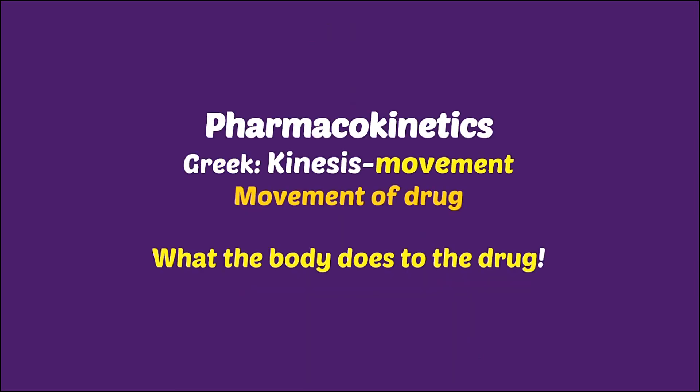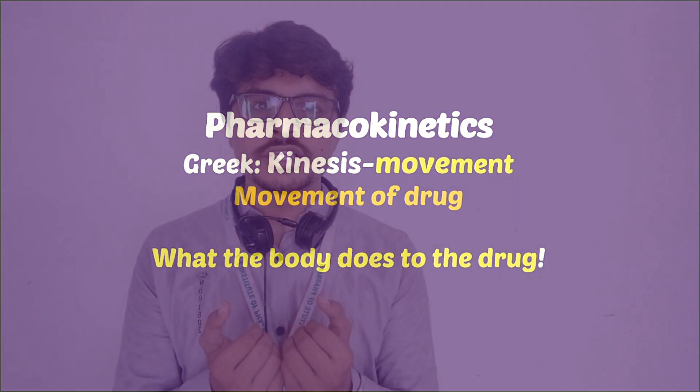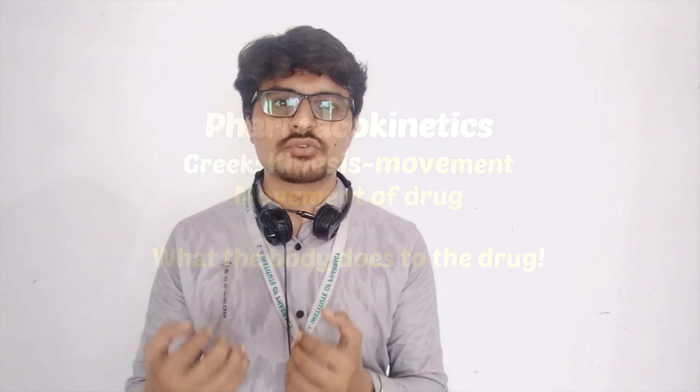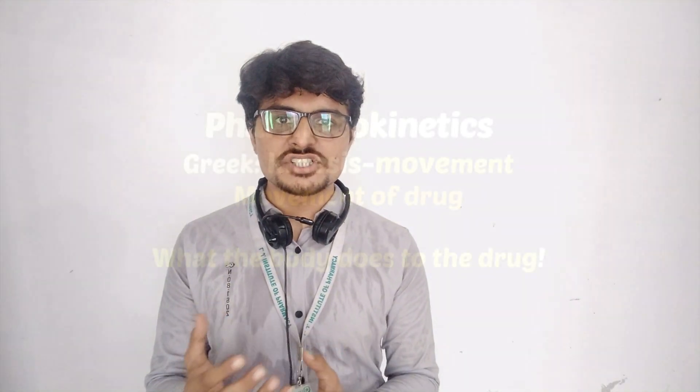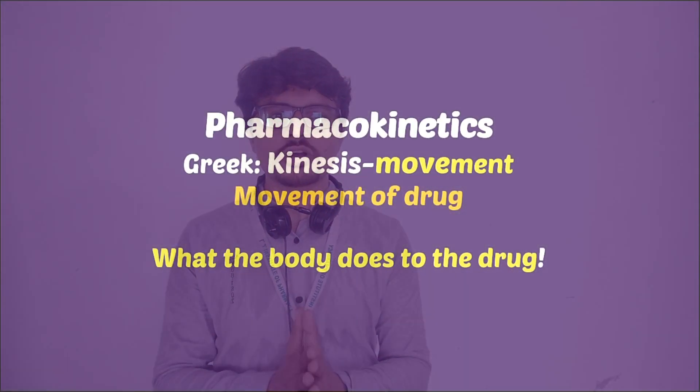Moving on to pharmacokinetics. The word kinetic is derived from the Greek word kinesis, meaning movement. So pharmacokinetics is the movement of drug — it is what the body does to a drug. When we take a drug orally, it moves to our GI tract, is absorbed, enters the bloodstream, goes to various cellular levels, comes back to the liver, and is passed out of the body through urine. Throughout this process — from taking the drug to its excretion — what the body does to the drug is what we study in pharmacokinetics.